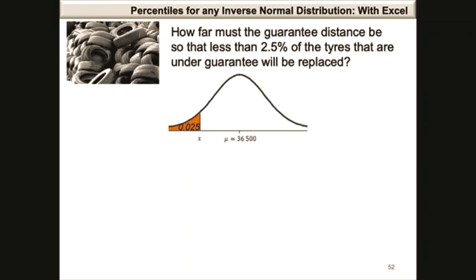How far must the guarantee distance be so that less than 2.5% of the tires under guarantee will be replaced? The area to the left of x is 0.025. Using Excel, we make use of the norm.inv function since we want Excel to return the value of x. The value of x equals norm.inv with arguments 0.025 — the area to the left of x — 36,500 as the population mean, and 5,000 as the population standard deviation. Excel returns a value of x of 26,700.19.